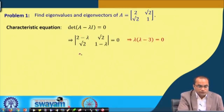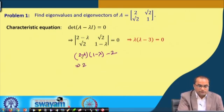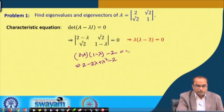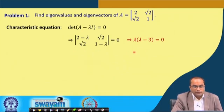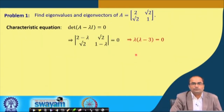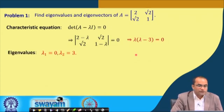Expanding gives (2 minus lambda)(1 minus lambda) minus 2 equals zero, which simplifies to lambda squared minus 3 lambda plus 2 minus 2, giving lambda squared minus 3 lambda equals zero. This factors as lambda times (lambda minus 3) equals zero, so the two eigenvalues are lambda equals 0 and lambda equals 3.